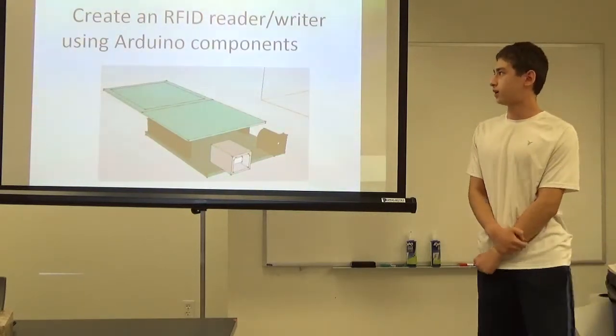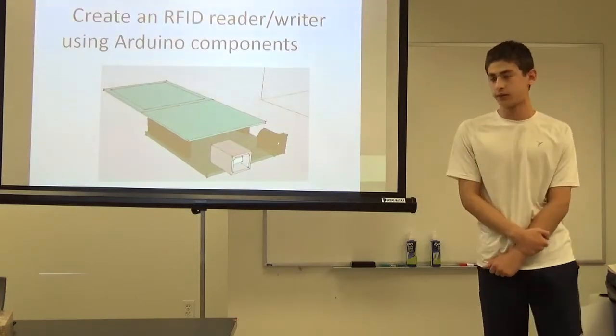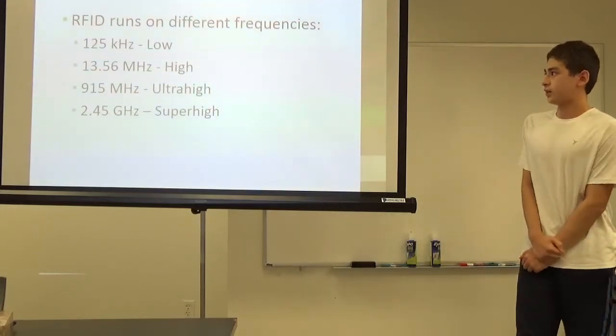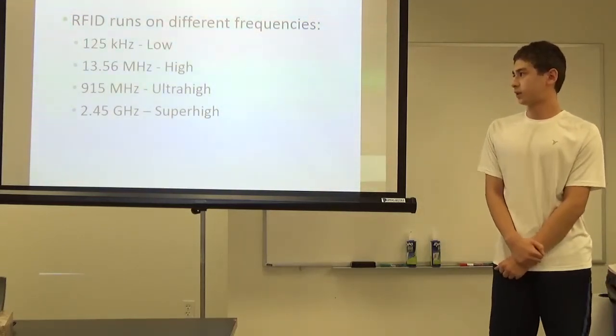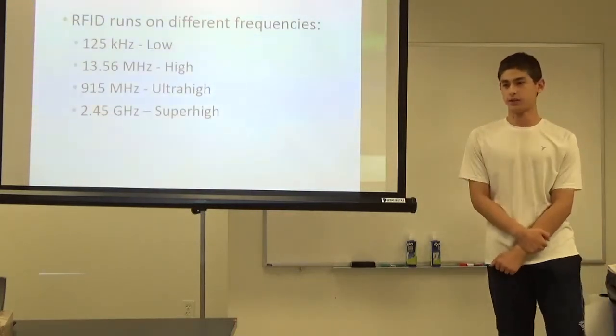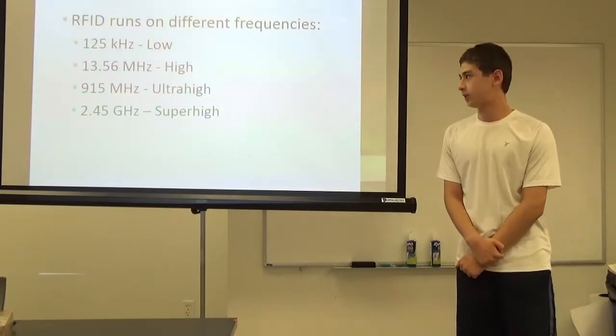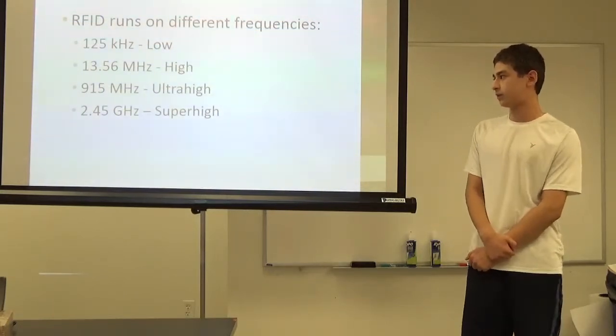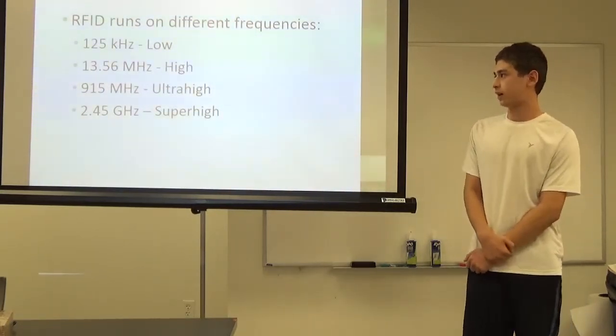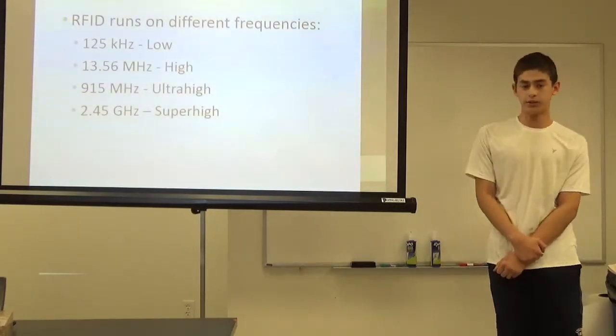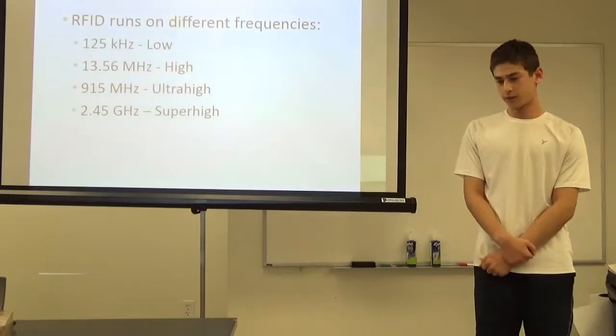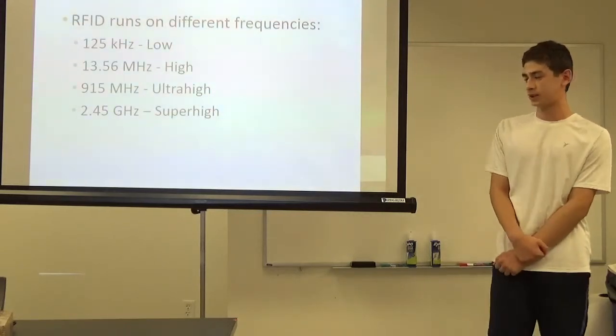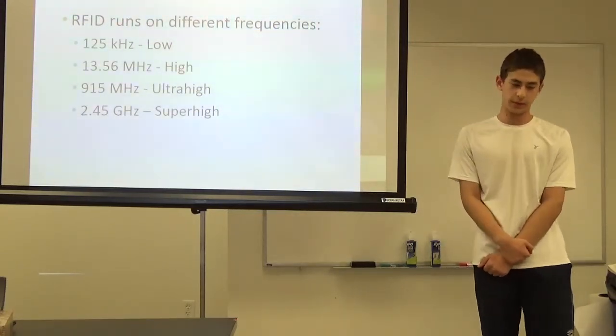My whole project was to create an RFID reader-writer using the Arduino components. I began my research. I discovered that RFID runs on different frequencies. The first one is 125 kilohertz, or low frequency. And there's 13.56 megahertz for high frequency. 915 megahertz for ultra high, and 2.45 gigahertz for super high. Most tags use 13.56, which has a range of about maybe a foot, a foot and a half. And then 915 megahertz is usually in EasyPasses, usually has a range of about three to five meters.